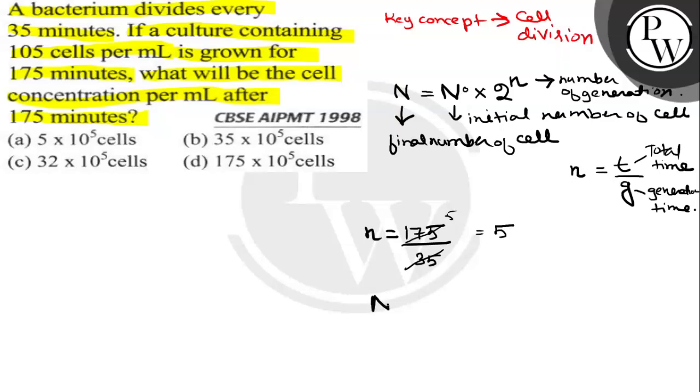Now keeping this small n in mind, we have to put it in the formula N equals N₀ into 2 to the power n. This capital N is final number of cells which we have to find out. N₀ is given, that is 10 to the power 5 cells, and small n we have already found out, this is 2 to the power 5. So final number of cells are 2 to the power 5 into 10 to the power 5, which is given in this option. Option C, because 2 to the power 5 comes out to be 32 into 10 to the power 5.